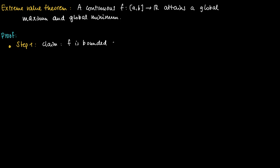For a bounded function there should be a constant larger than 0 so that the absolute value of f is smaller or equal than c for any x in the interval. So the condition is: the absolute value of f is smaller or equal than some number c.